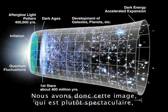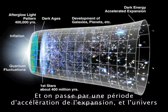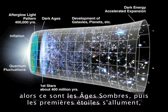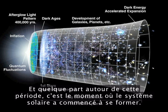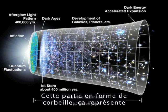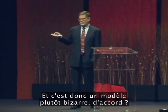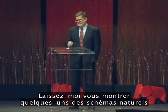We have a picture showing a mysterious process that kicks the universe off at the beginning. We go through a period of accelerating expansion; the universe expands and cools until it becomes transparent. Then the dark ages, then the first stars turn on, they evolve into galaxies, and later into more expansive galaxies. Somewhere around this period our solar system started forming, maturing up to the present time. That wastebasket part represents what the structure of space-time itself is doing during this period.